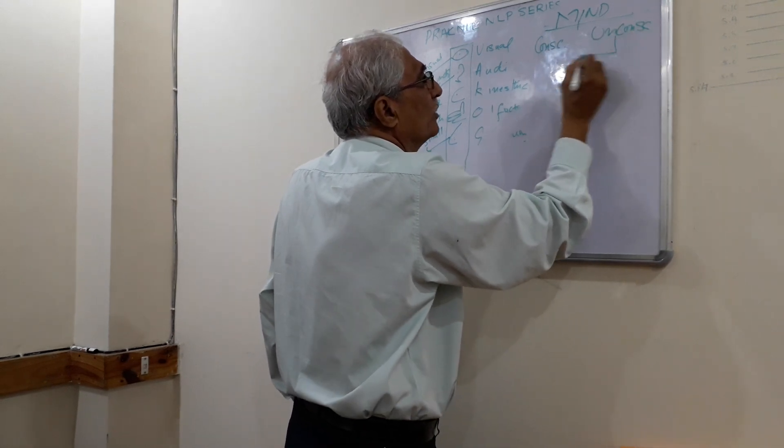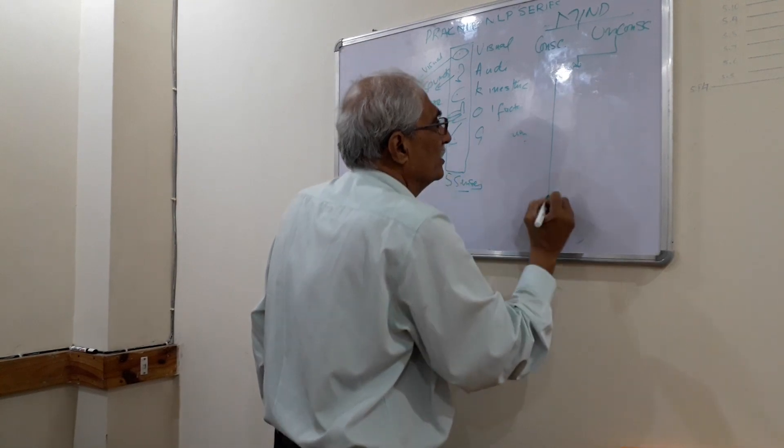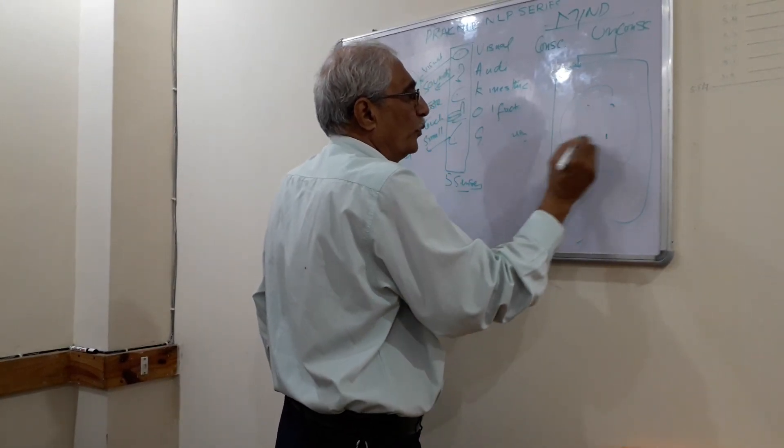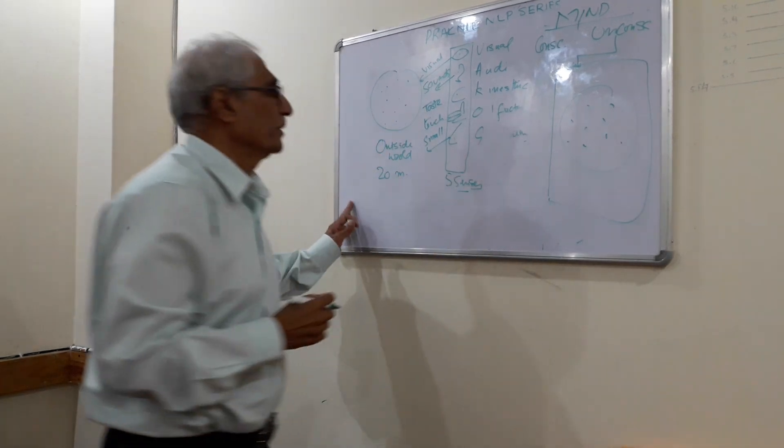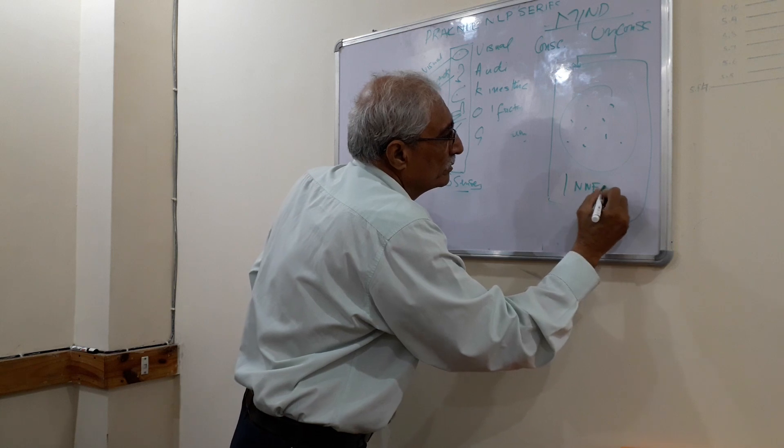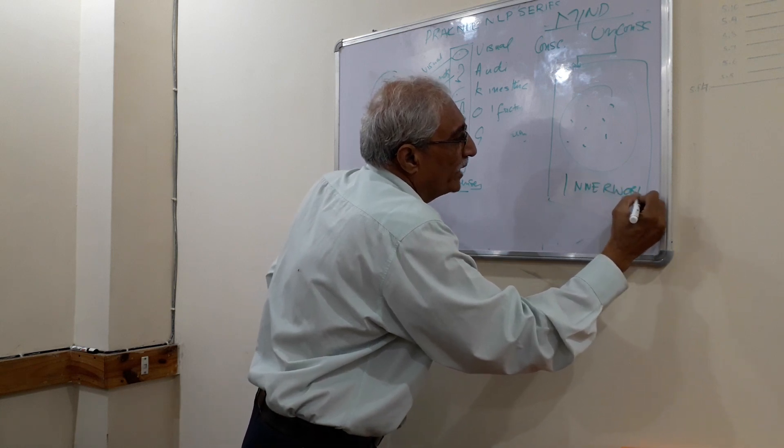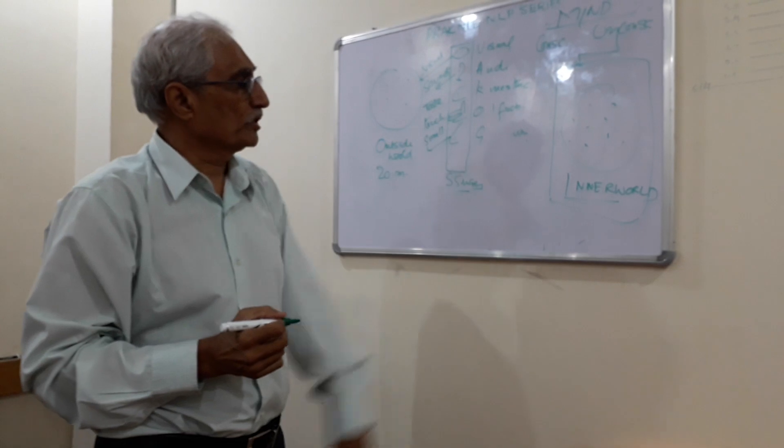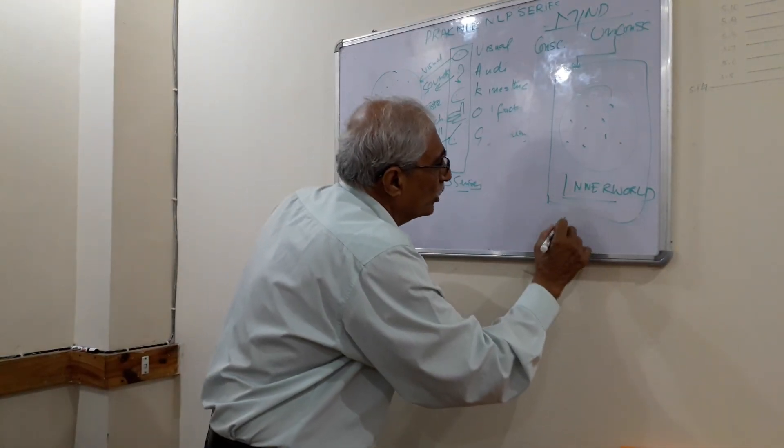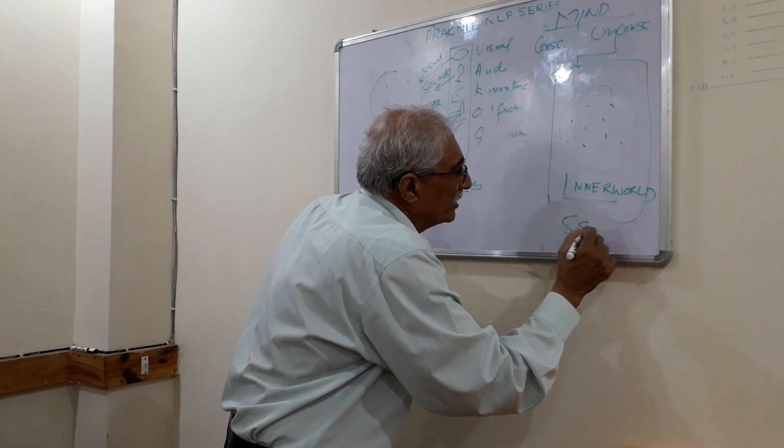In the unconscious mind, this outside world will be represented in a different way than what it was outside. This is what we call our inner world, as recorded in our subconscious or unconscious mind. It will have all the elements of the five senses.